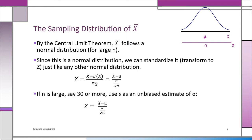So the Z-test formula is: Z equals x-bar minus mu, divided by S over the square root of n. This gives us a Z test for large samples, and this will be used a lot in this course.